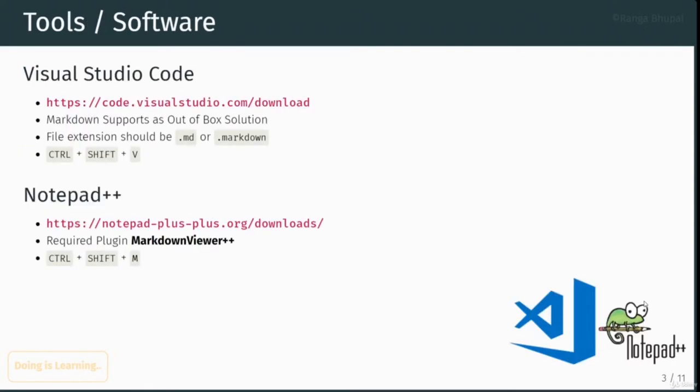These are the tools I have been using for quite some time. I would recommend using Visual Studio Code because it has many cool features and I have been using VS Code for more than five years. I believe you would like it as well. I'll be using a Windows machine for this course. Please download VS Code from the internet or from the link mentioned on this slide. Along with that, we will look at another tool which is Notepad++.